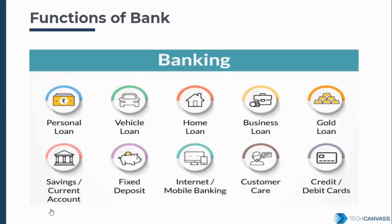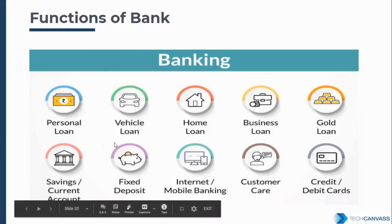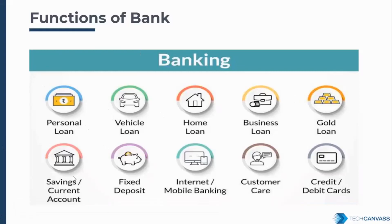Banks offer many functions. The first category covers different types of loans: personal loans, vehicle loans, consumer product loans, and business loans. The second category includes other benefits such as opening a savings account or a current account. Savings accounts are mostly for salaried persons, while current accounts are mostly for people in business.